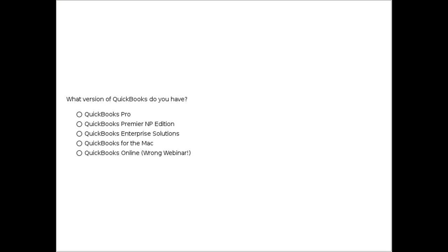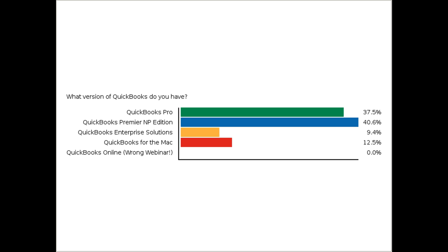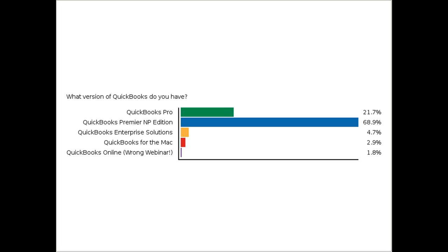Greg asks which version of QuickBooks attendees have. Options include QuickBooks Pro, QuickBooks Premier Nonprofit Edition (available at TechSoup for $50), and Enterprise Solutions (around $1,200–$1,300). Enterprise has higher list limits — up to 100,000 entries versus 14,500 for Pro or Premier. QuickBooks for Mac has been discontinued since 2016, so Mac users need to switch to a PC version or go to the Online Edition.